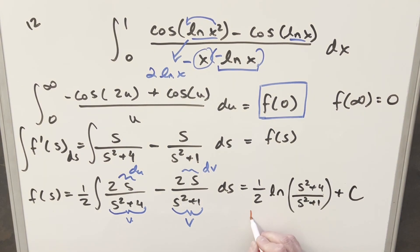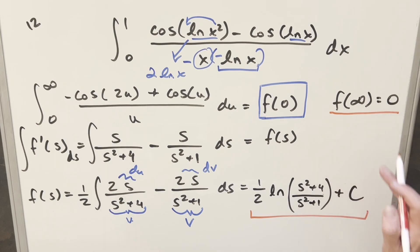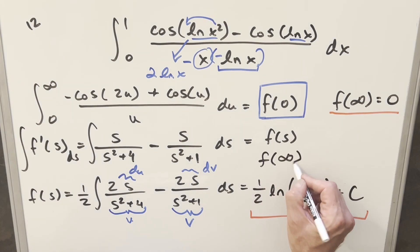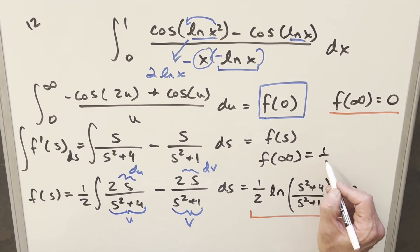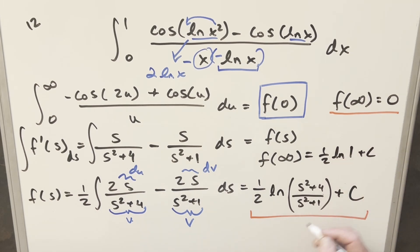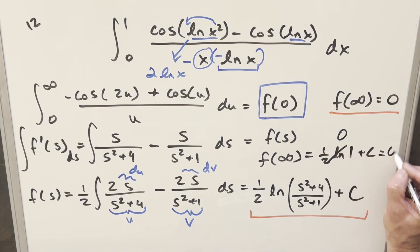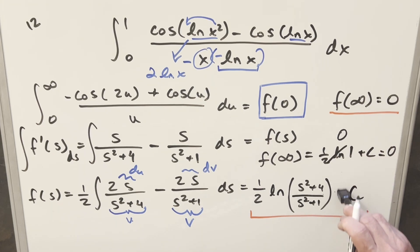We have our f(s) formula, but we need to find c. Using our earlier boundary condition — as s goes to infinity, f(s) goes to 0 — we plug in: 1/2 times natural log of (s² + 4)/(s² + 1) approaches 1/2 times natural log of 1, which is 0. So 0 plus c equals 0, meaning c equals 0.